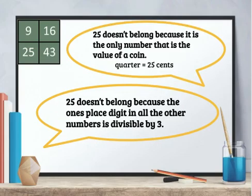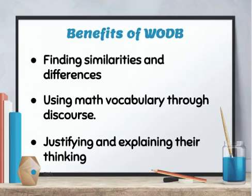Here are some possibilities. 25 doesn't belong because it is the only number that is the value of a coin. 25 doesn't belong because the ones-place digit in all the other numbers is divisible by three. Hopefully that felt kind of good to stretch ourselves a bit.